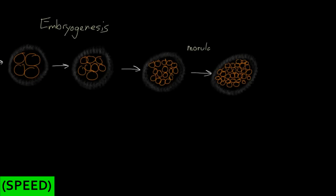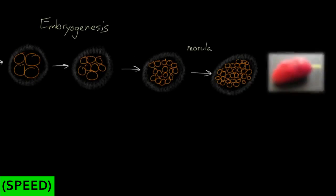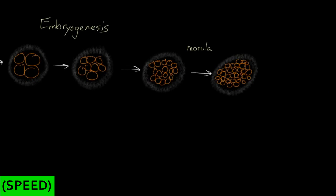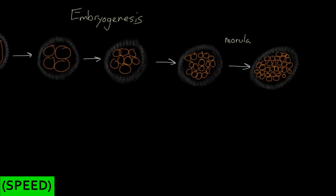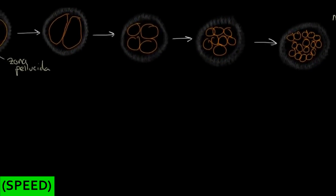Morula is just a Greek word that means mulberry, and you actually do look a little bit like a mulberry. Here's a picture of a mulberry from my front yard to prove it — this one's not quite ripe. So you're finished with the cleavage stage of early embryogenesis. You've gone from one cell and just divided, without growing at all, into 2, 4, 8, 16, and then 32 cells.